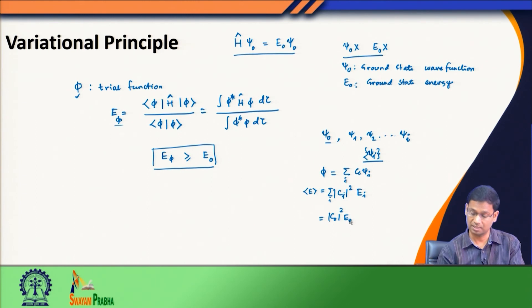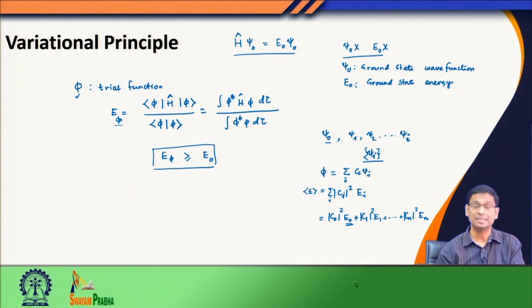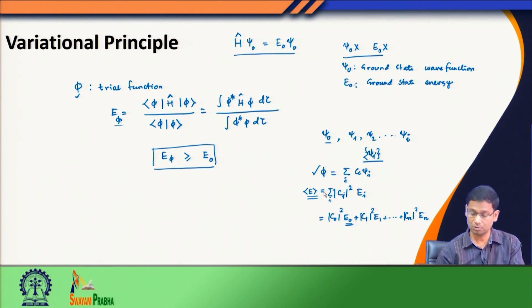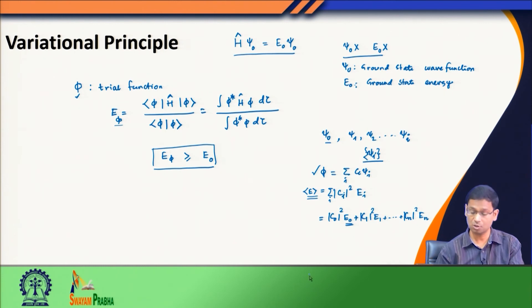If I expand it, I will have C₀² E₀ + C₁² E₁ and so on. E₀ is the ground state energy, E₁ is the first excited state energy, and so on. C₀² is the contribution of the coefficient corresponding to ψ₀ — the overall contribution of the ground state to this average energy. Let us consider the case where the trial function φ is simply equal to ψ₀. Then C₀ is 1 and C₁, C₂, C₃ all become 0, so the average energy becomes 1² × E₀ = E₀, the ground state energy.